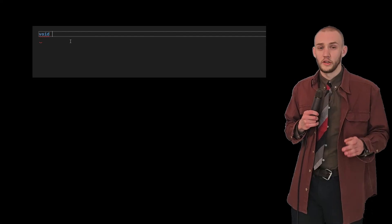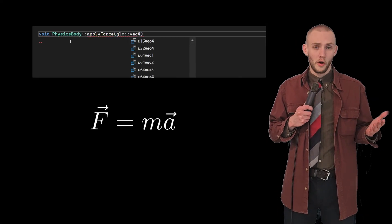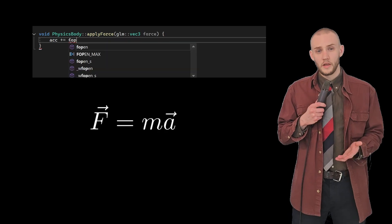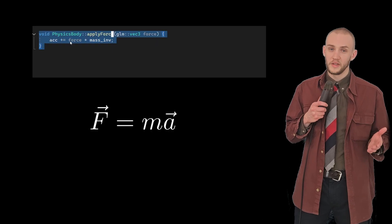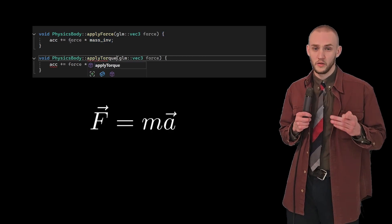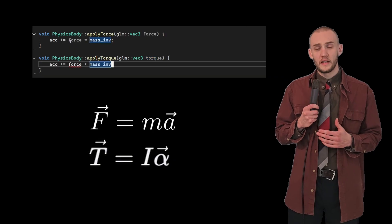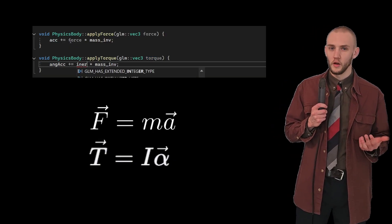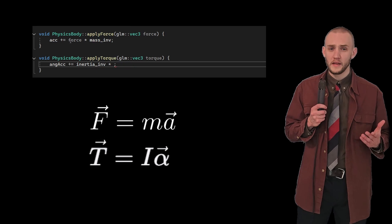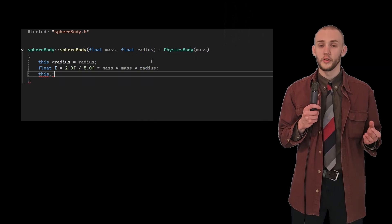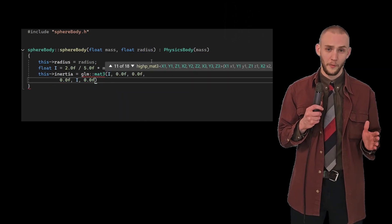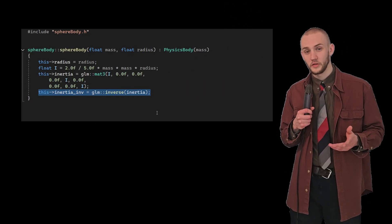With something easier on the eyes, we can move back to the physics. We're going to want to apply forces to the bodies, so let's add a mass variable and a function called applyForce. Here we invoke Newton's second law to get the resulting acceleration. To save some computation time and avoid division by zero, we can define a variable for the inverse mass as well and use this in the function. Torque gives rise to angular acceleration according to this formula — the rotational equivalent of Newton's second law, where force is replaced by torque and mass is replaced by the moment of inertia matrix.